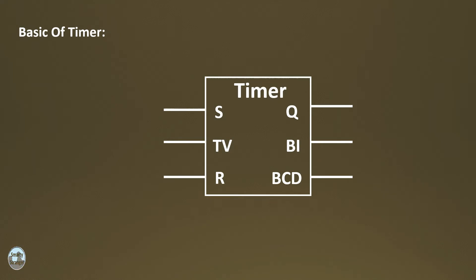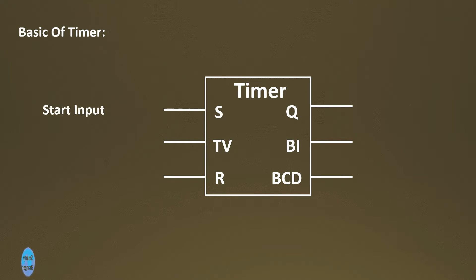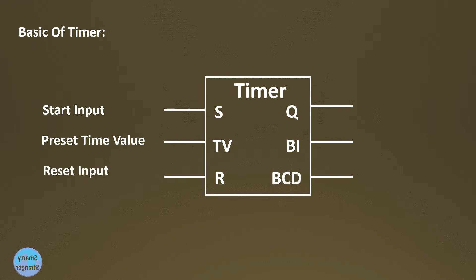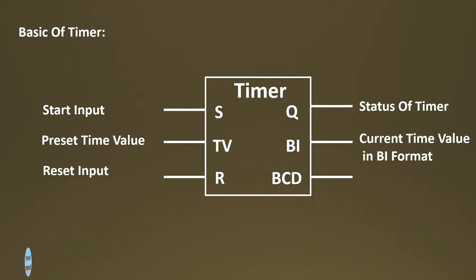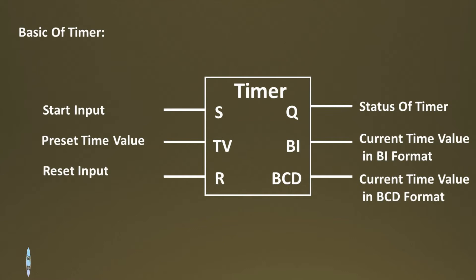All PLC softwares normally have the same shape of timer, though pins of inputs and outputs may differ — you can take help from its manual. The S pin is used to start or trigger the timer instruction. The TV pin is used to set the preset time value. The R pin is used to reset the timer instruction. The Q pin shows the status of the timer instruction. The BI pin shows the current value in BI format, and the BCD pin shows the current value in BCD format.